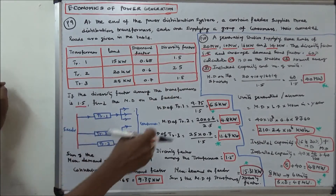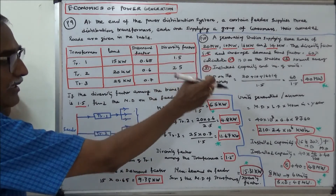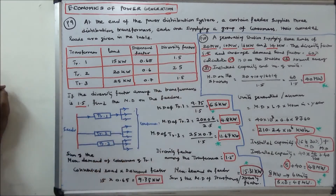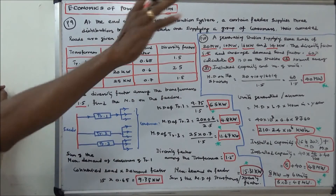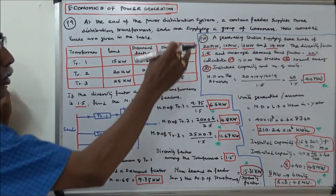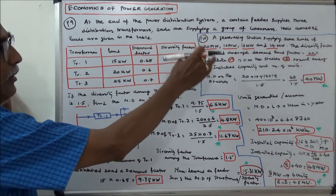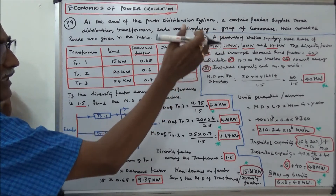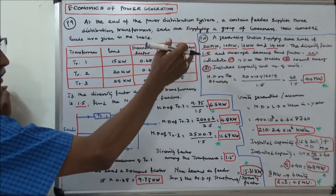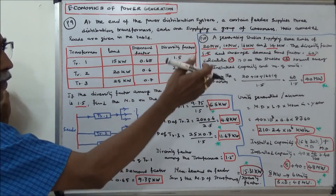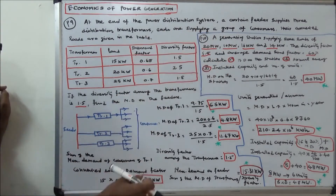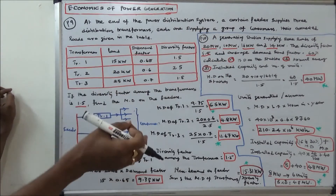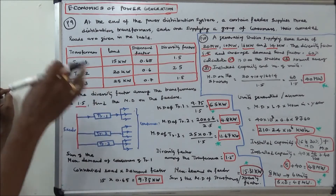First, we calculate the maximum demand on the station. That equals the sum of the peak loads — 20 plus 10 plus 16 plus 14 equals 60 — divided by the diversity factor 1.5, giving 40 megawatts. That is the maximum demand on the station.